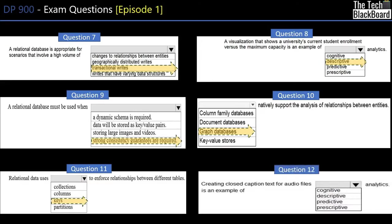Question twelve: creating closed caption text for audio files is an example of which analytics — cognitive, descriptive, predictive, or prescriptive? This is similar to transcribing audio files — both mean generating text for audio files. Do not get confused by different variations of the same question. The answer is cognitive analytics.